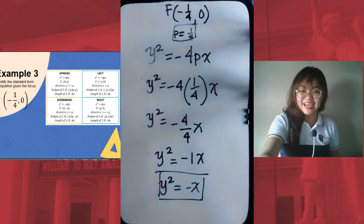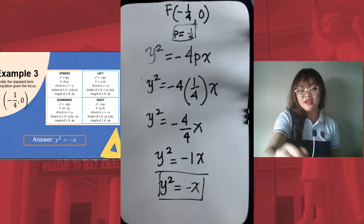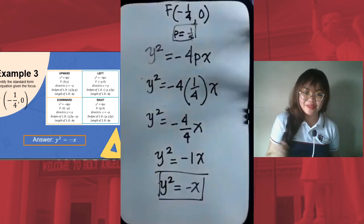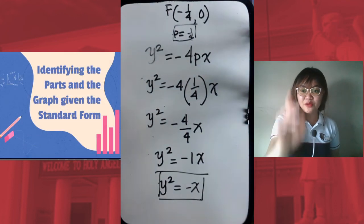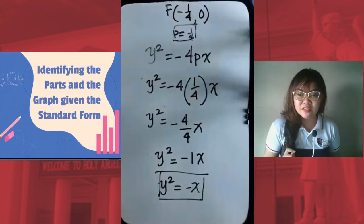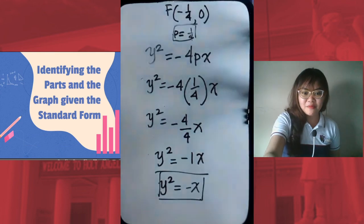So that is our final answer: y² = -x. Thank you so much. For our next video, we will be identifying the parts and the graph given the standard form. Till then, bye-bye.